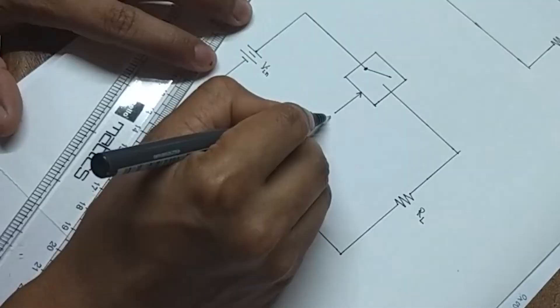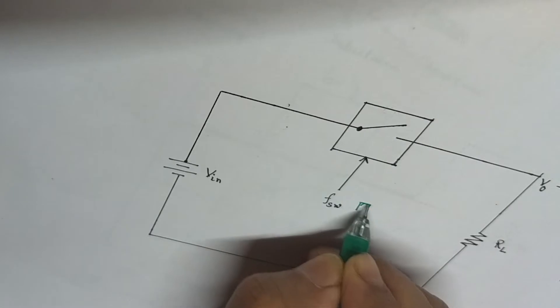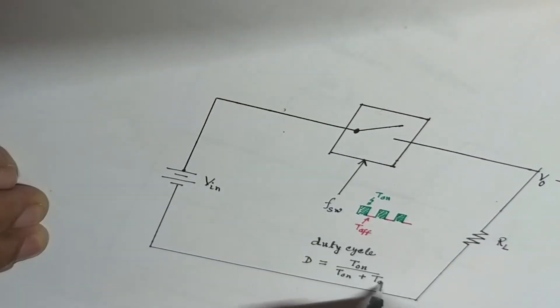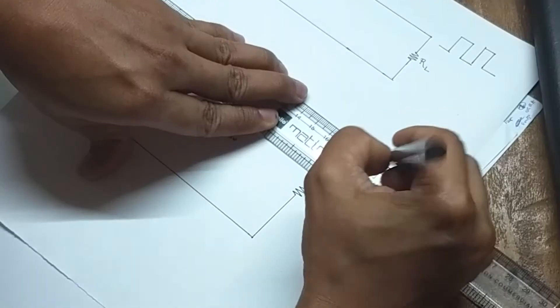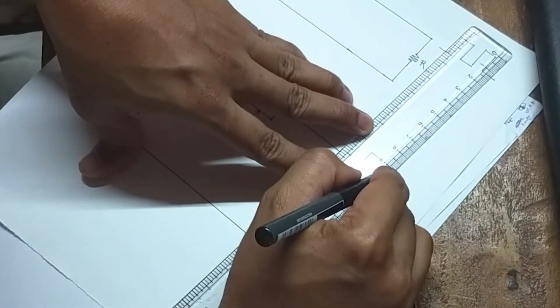Now the switch is turned on and off at a high frequency. Suppose the switch is turned on for 50% of the time, which is technically known as the duty cycle of the switch. The voltage or the average voltage to be more precise in the load will also become 50% of the input voltage.